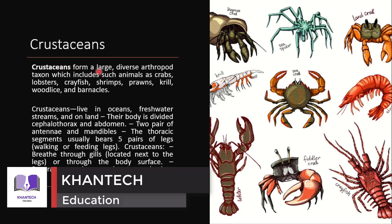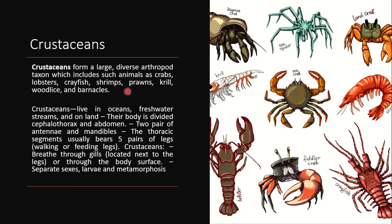Next is Crustacea. Crustaceans form a large, diverse arthropod taxon, which includes crabs, lobsters, crayfish, shrimps, prawns, krill, woodlice, and barnacles. Crustaceans usually live in oceans, freshwater streams, and on land. Their body is divided into a cephalothorax and abdomen, with two pairs of antennae and mandibles present.